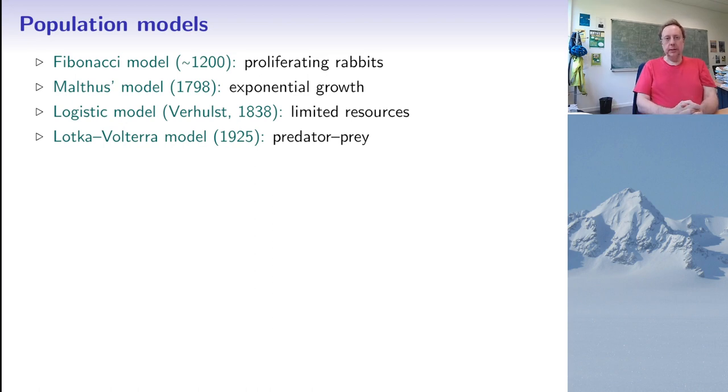And this model was actually introduced by Fibonacci or Leonardo of Pisa around 1200 to describe the proliferation of a population of rabbits. So he considered that you start with a couple of rabbits and after a given time, maybe a year, maybe less, they have one couple of offspring. And then at each time step, the offspring becomes adult and every adult couple has again a couple of offspring.